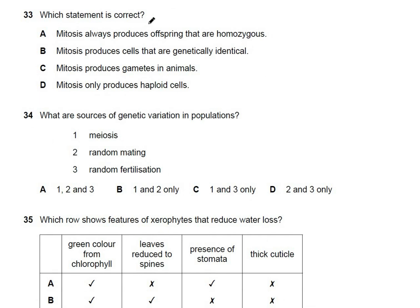Question 33: which statement about mitosis is correct? Mitosis does not produce offspring. B — mitosis produces genetically identical cells — is absolutely correct. Meiosis, not mitosis, produces gametes. Option D is also incorrect. The answer is B.